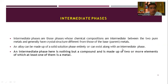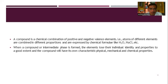Intermediate phases are those whose chemical compositions are intermediate between two pure metals and generally have a crystal structure different from those of the base metals. An alloy can be made up of a solid solution phase entirely or can exist along with an intermediate phase. An intermediate phase is essentially a compound made up of two or more elements, of which at least one is a metal. When a compound or intermediate phase is formed, the elements lose their individual identity and properties to a good extent, and the compound will have its own physical, mechanical, and chemical properties.